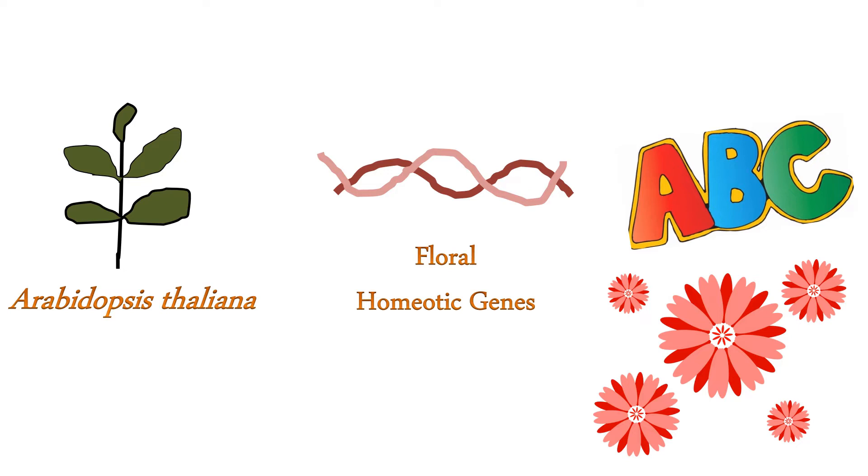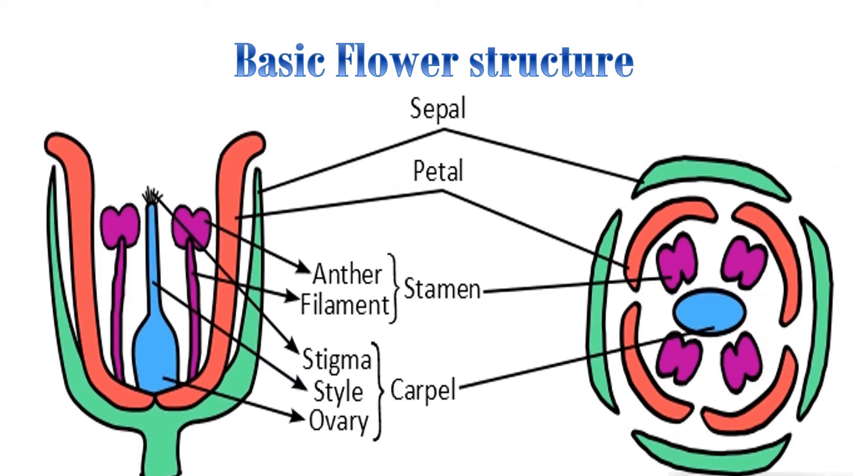A basic flower consists of four floral organs: sepal, petal, stamen, and carpel. Sepals are protective coverings that support the petals. Petals are modified leaves surrounding the reproductive organs, that is stamen and carpel. Stamen is the male reproductive organ and carpel is the female reproductive organ.